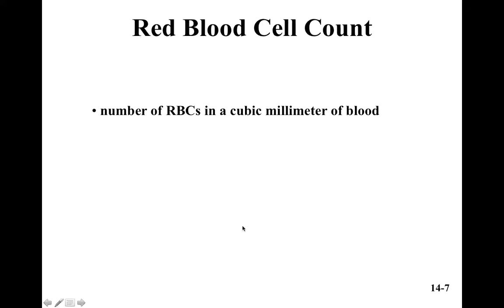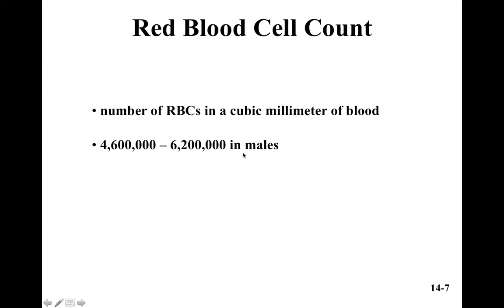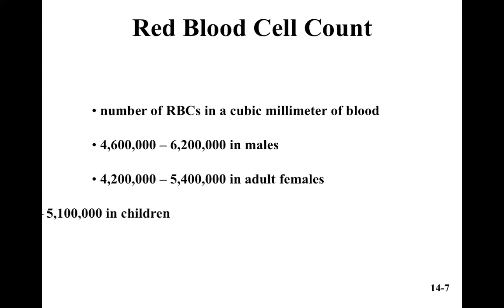Red blood cell count really reflects how much oxygen the blood can carry, and it's reported as the number of red blood cells per cubic millimeter of blood. Males have 4,600,000 to 6,200,000 red blood cells per cubic millimeter of blood. Females and children have less, mainly because of their size.